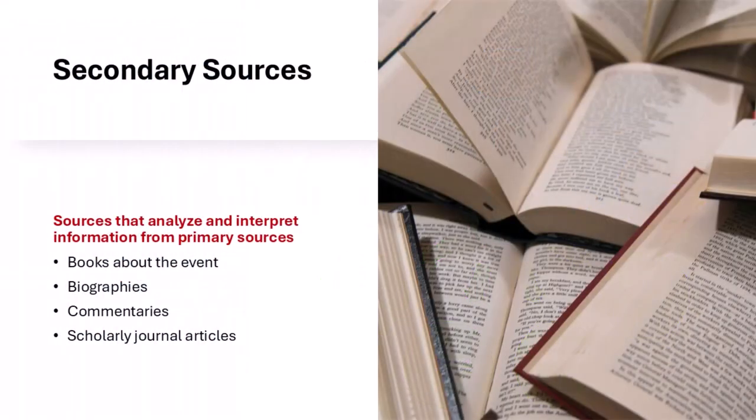A secondary source is one that has been created after the event has passed. It includes second-hand information intended to summarize, analyze, interpret, or comment on one or more primary sources. For example, a historian might analyze and interpret primary sources to write a book that analyzes an event, or a biography that analyzes an historical figure.